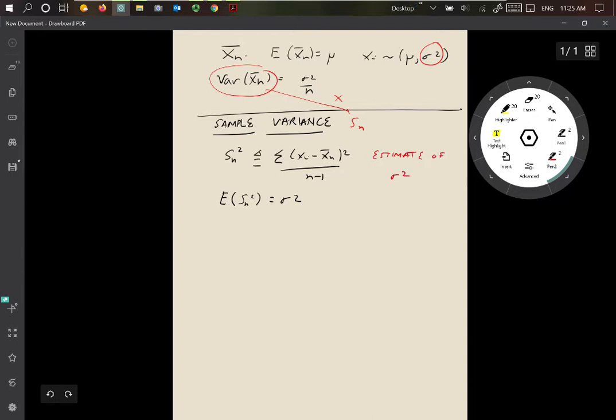And we want this because remember that what we really care about is how far away is x̄ₙ from the true mean. And we know that it depends on two values: it depends on σ² and depends on n. Well, we know n, that's just the number of simulations we run. But σ² we don't know, and so what we'd like to do is estimate it using this estimate from Sₙ².